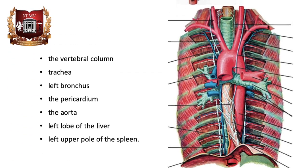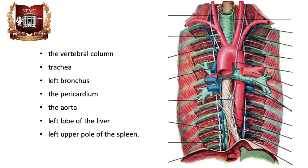Behind the esophagus is the vertebral column. On the anterior surface of the esophagus, in the cervical part, lies the trachea. The thoracic part of the esophagus is connected with the trachea, left bronchus, pericardium, and the thoracic vertebrae. The abdominal part of the esophagus borders on the liver and spleen.